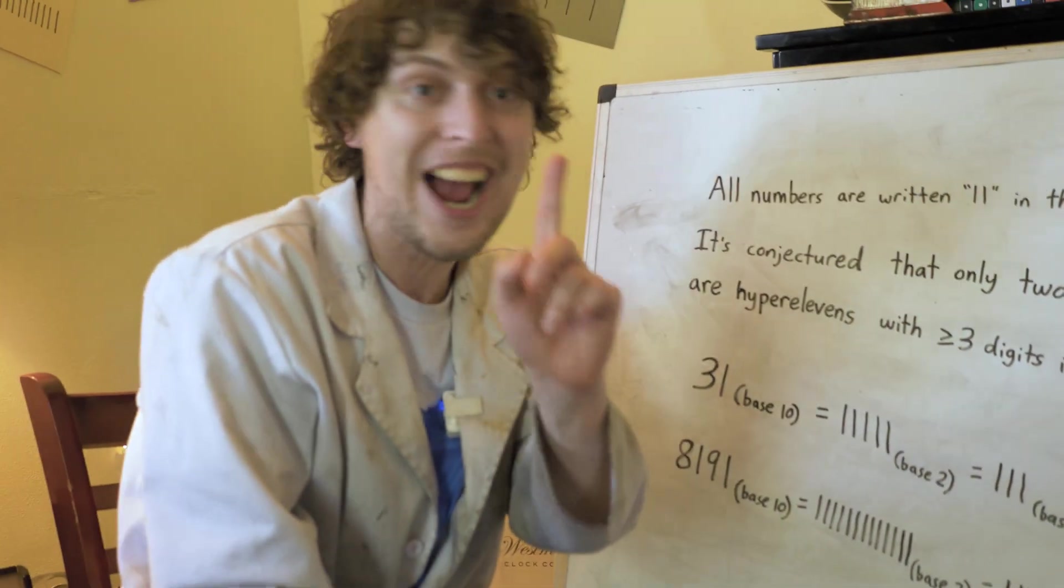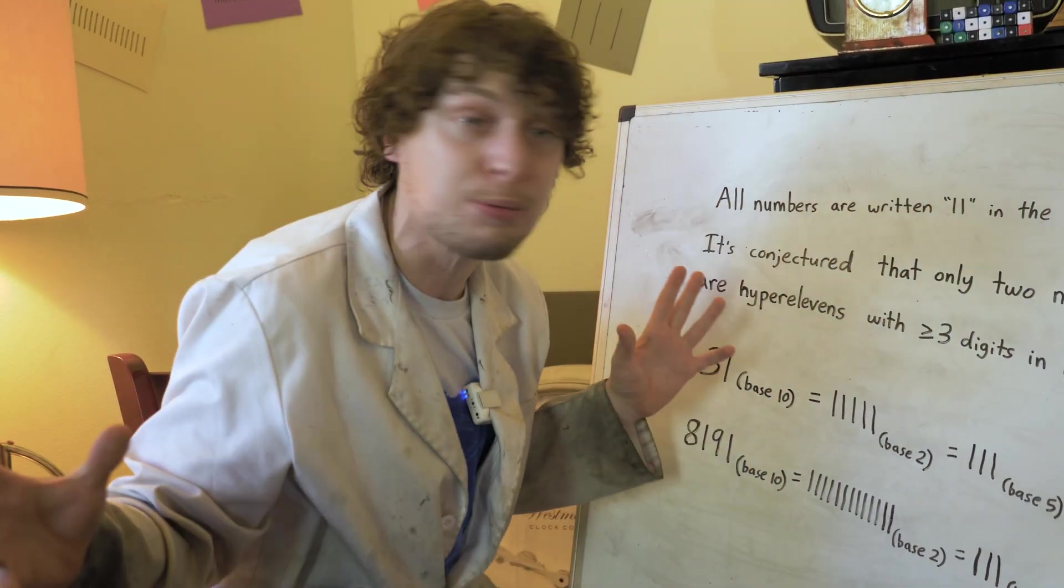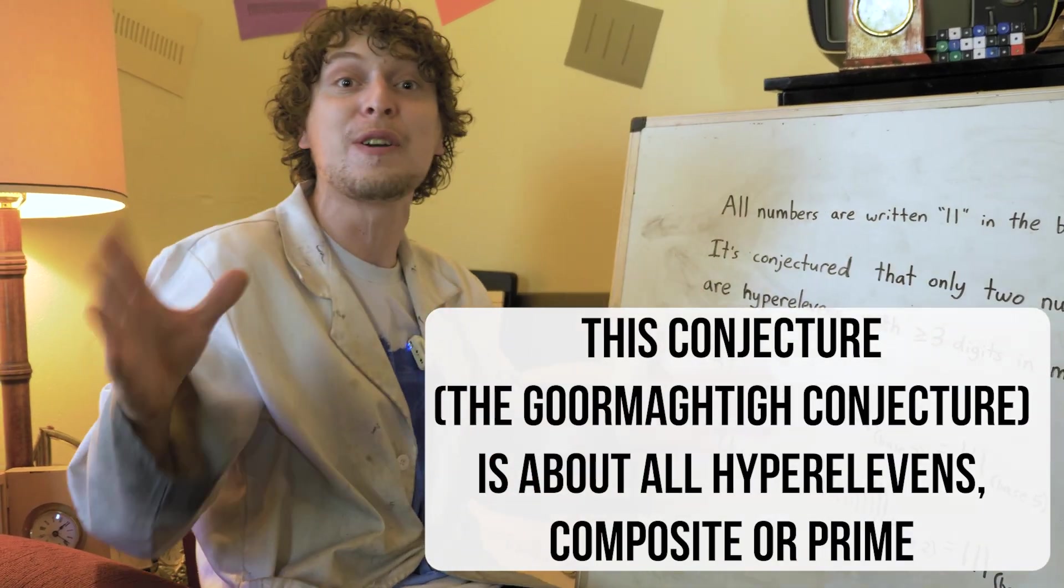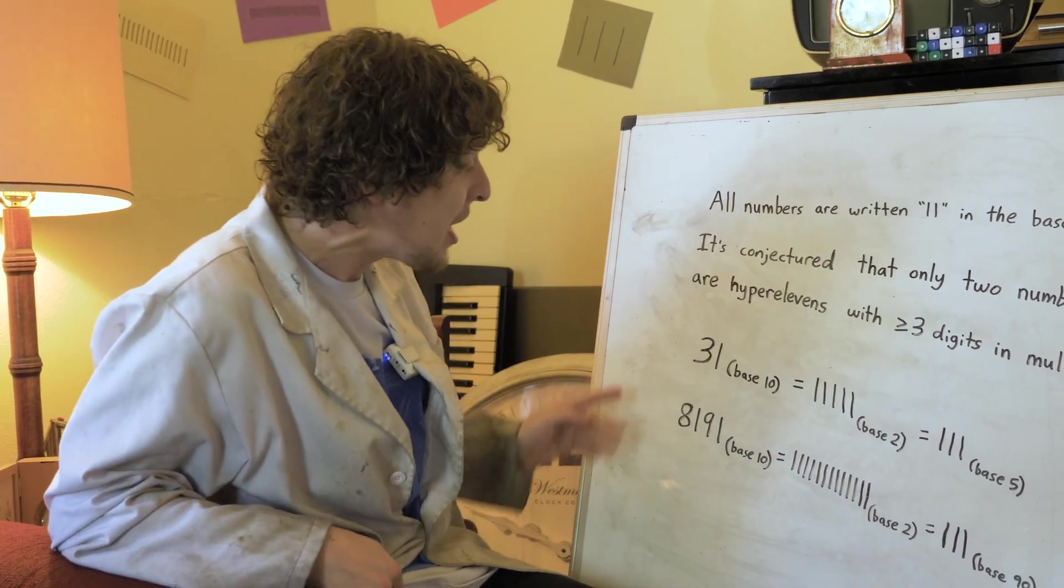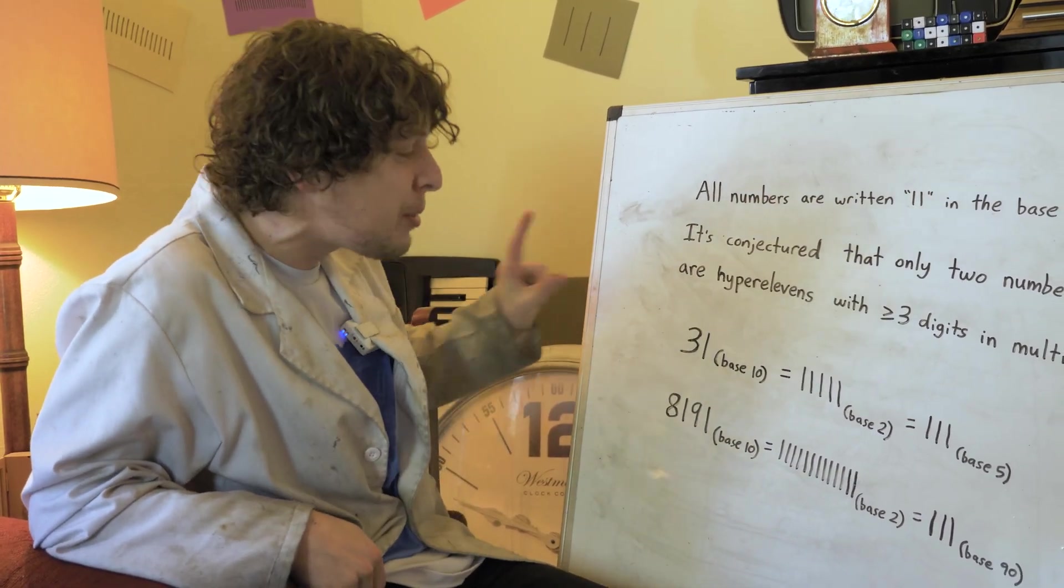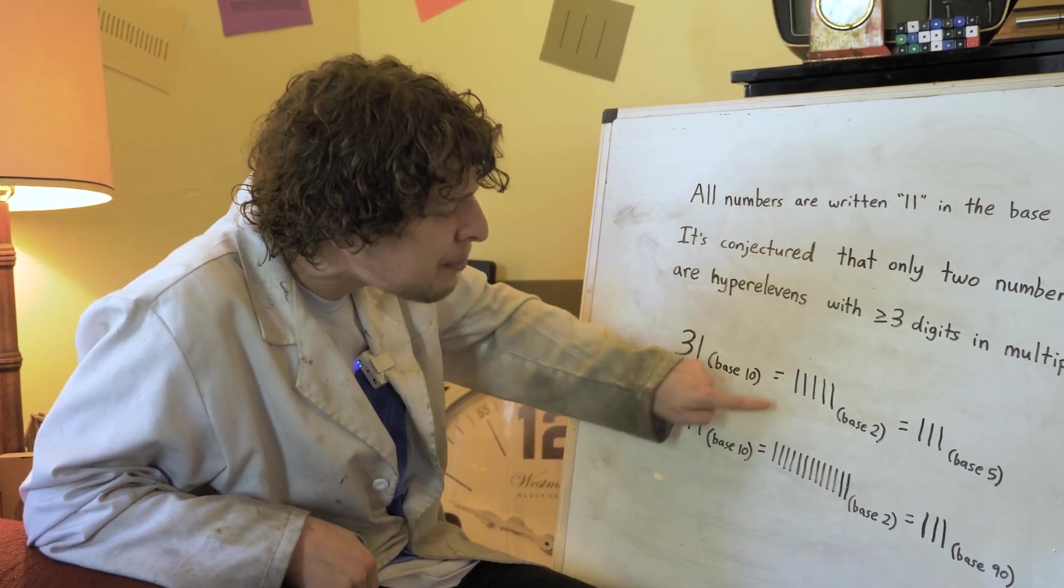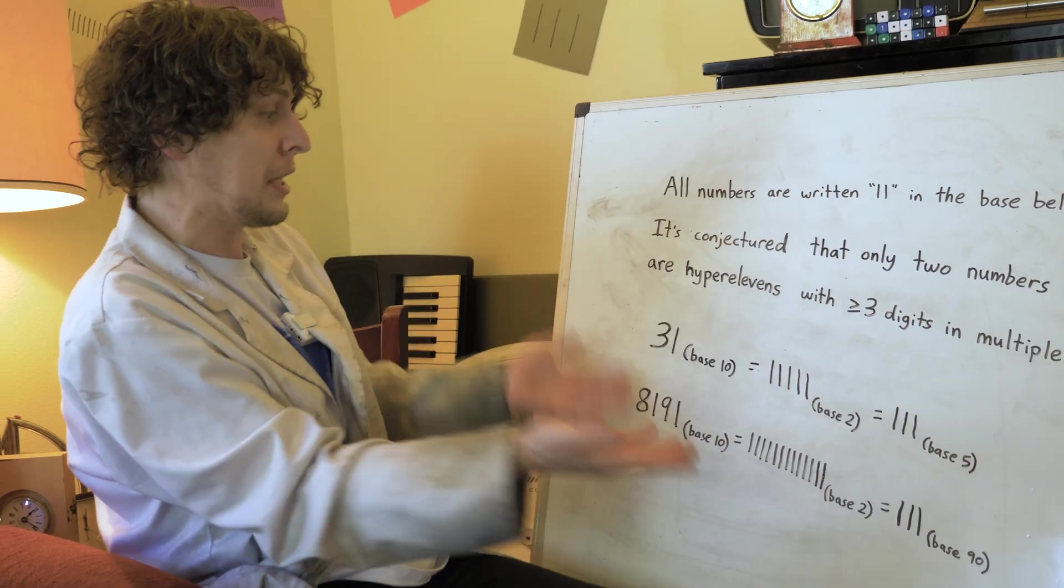But it's conjectured that those are the only two numbers in existence with that property that are hyper 11s of at least three digits in more than one base. It hasn't been proven, but very likely that apart from these two, which we'll also see later in a minute because the binary hyper 11s are extra important, there's probably no others in existence somehow.